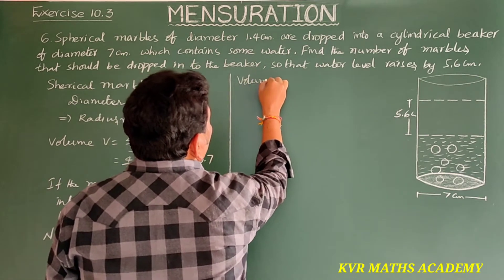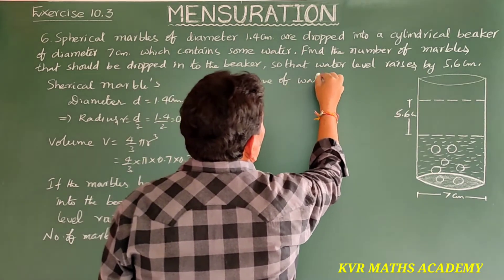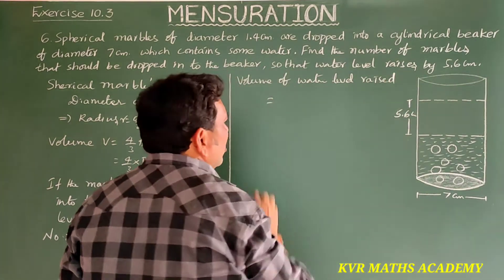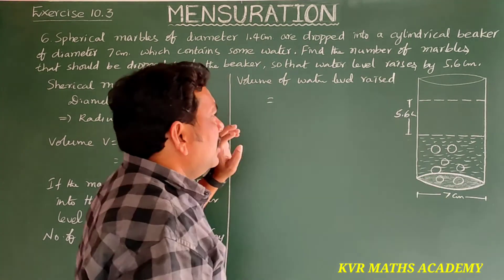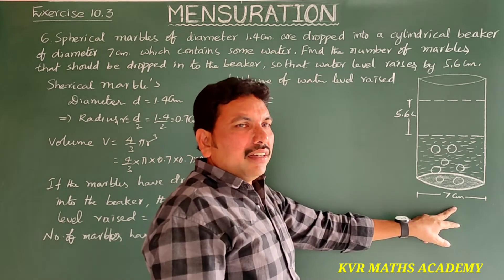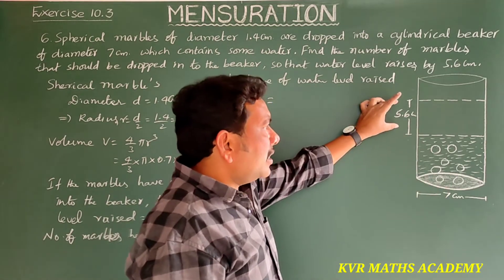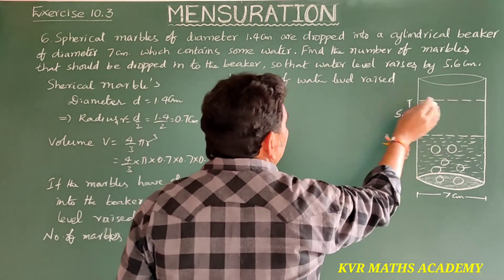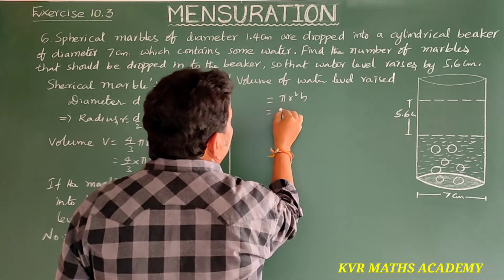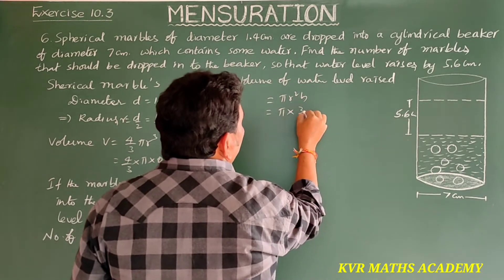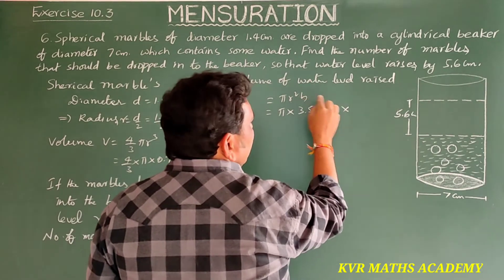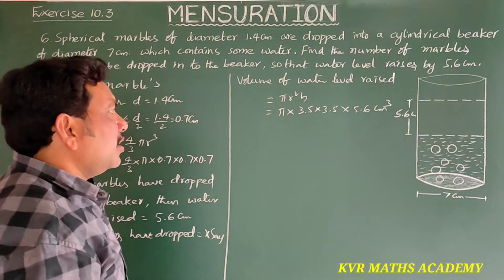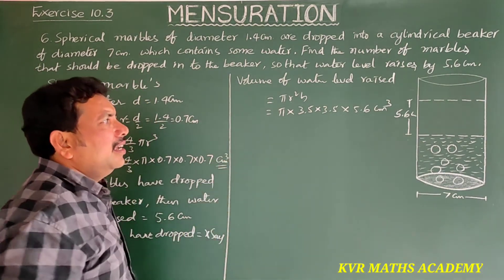Volume of water level raised: the cylindrical beaker has diameter 7 centimeters, so radius equals 3.5 centimeters, and height is 5.6 centimeters. Volume of water raised equals volume of the cylinder, using formula pi r squared h, that is pi into 3.5 into 3.5 into 5.6 centimeters cubed.